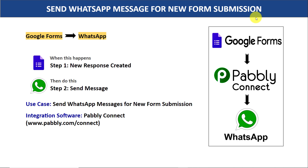Imagine this: you are using Google Forms to collect leads, and a lead called John has been generated in Google Forms. It has John's name, email address, WhatsApp number, and all those details. Now you want to send a thank you message to John on his WhatsApp number.